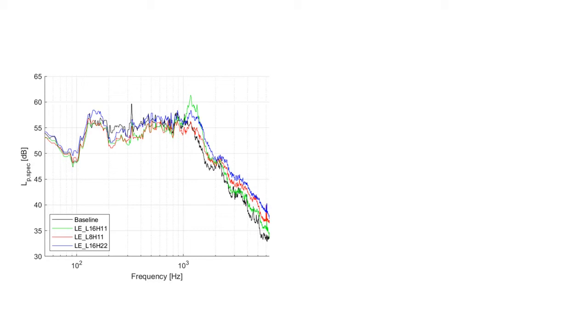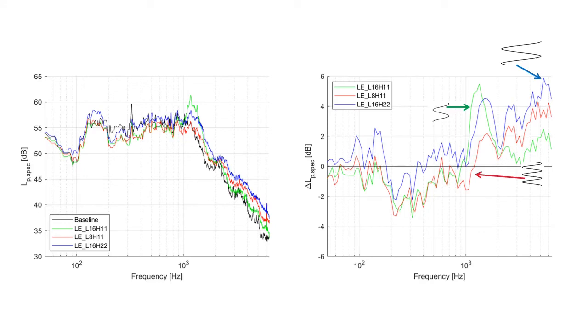So it's better to show the noise difference with respect to the baseline. Bear in mind that negative values of this curve mean that noise has been reduced. In our case, serrations reduce noise at low frequencies, but they increase it over 1000 Hz.